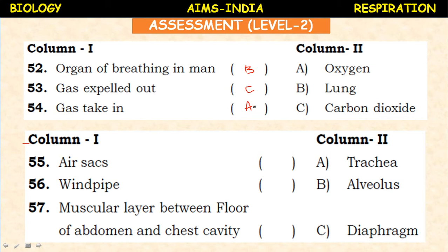Another small matching set: air sacs, windpipe, and the muscular layer between the floor of the abdomen and chest cavity. Trachea, alveolus, and diaphragm are given as options. Alveoli (or alveolus) are also called air sacs. Windpipe is also called the trachea. The muscular layer between the thoracic cavity and abdominal cavity is the diaphragm.